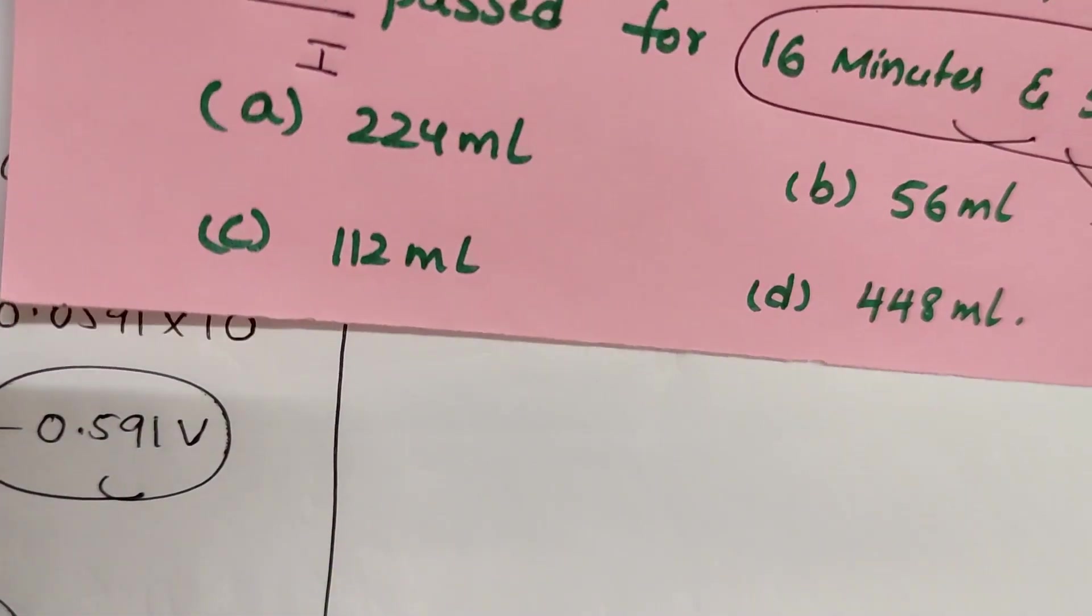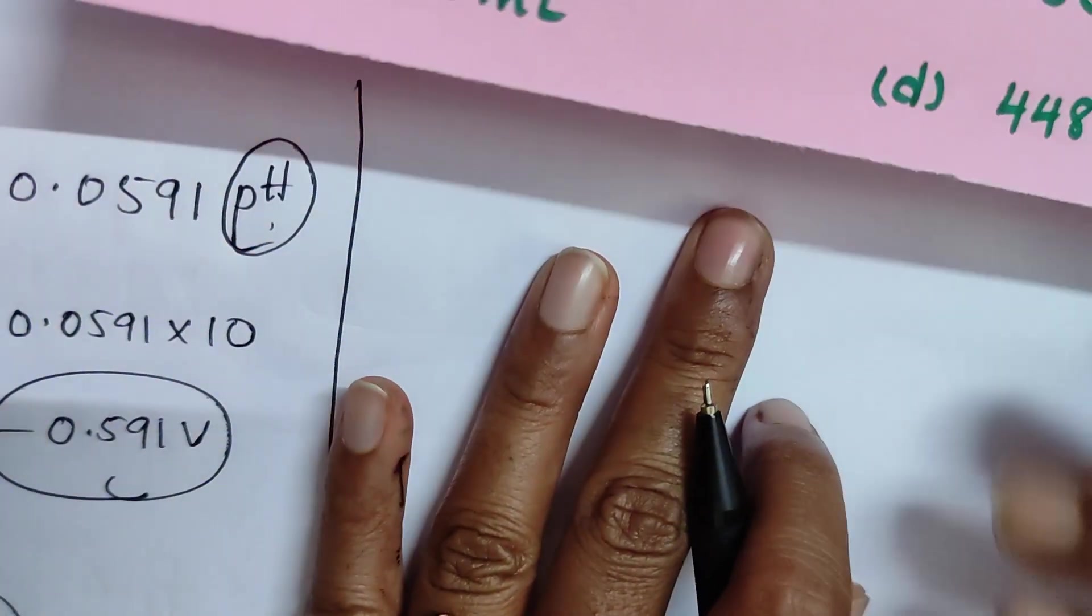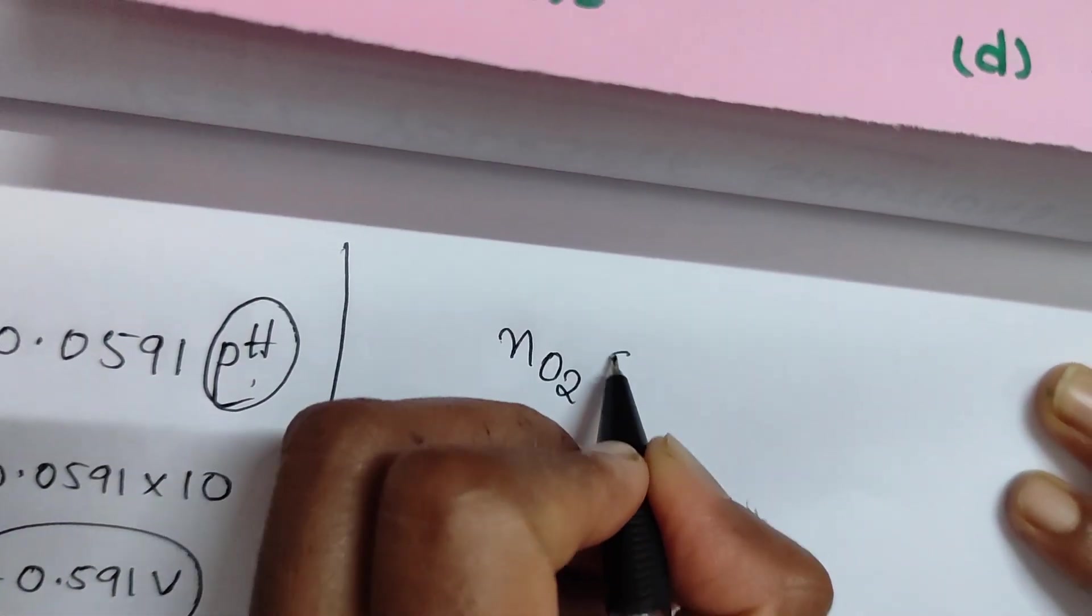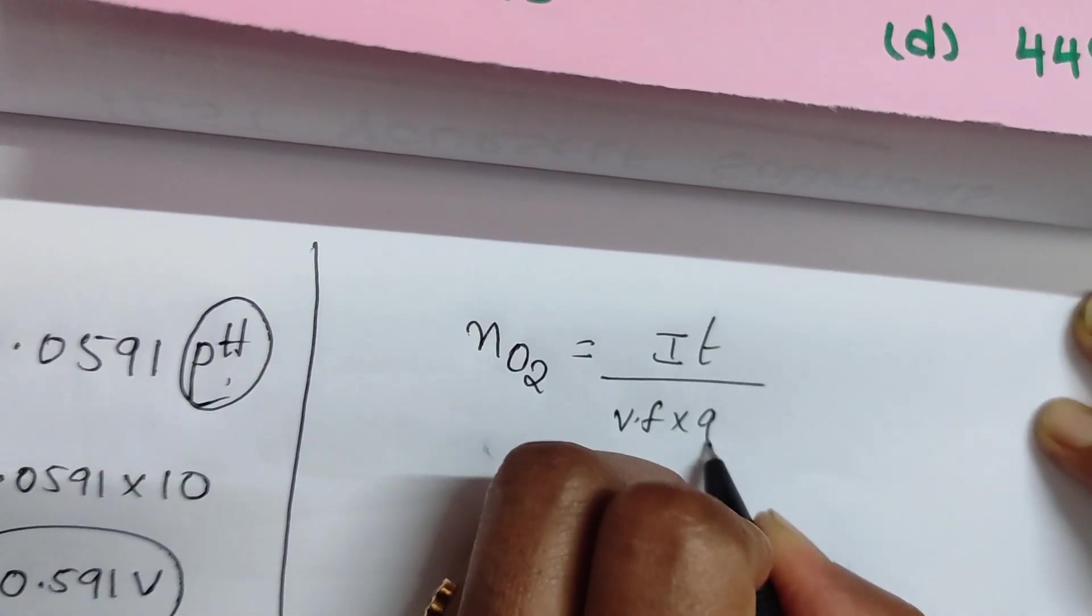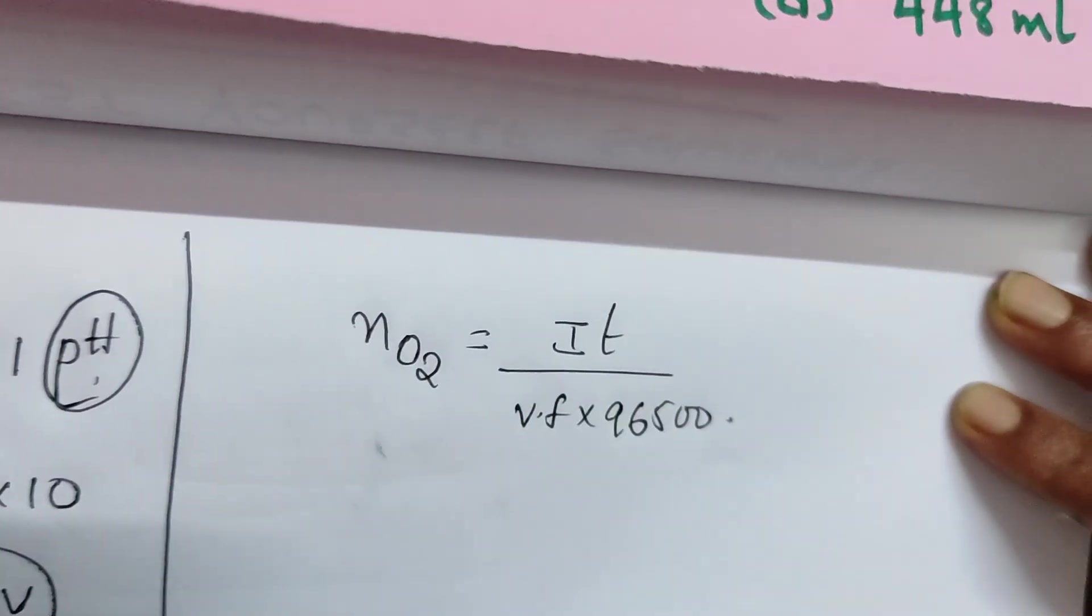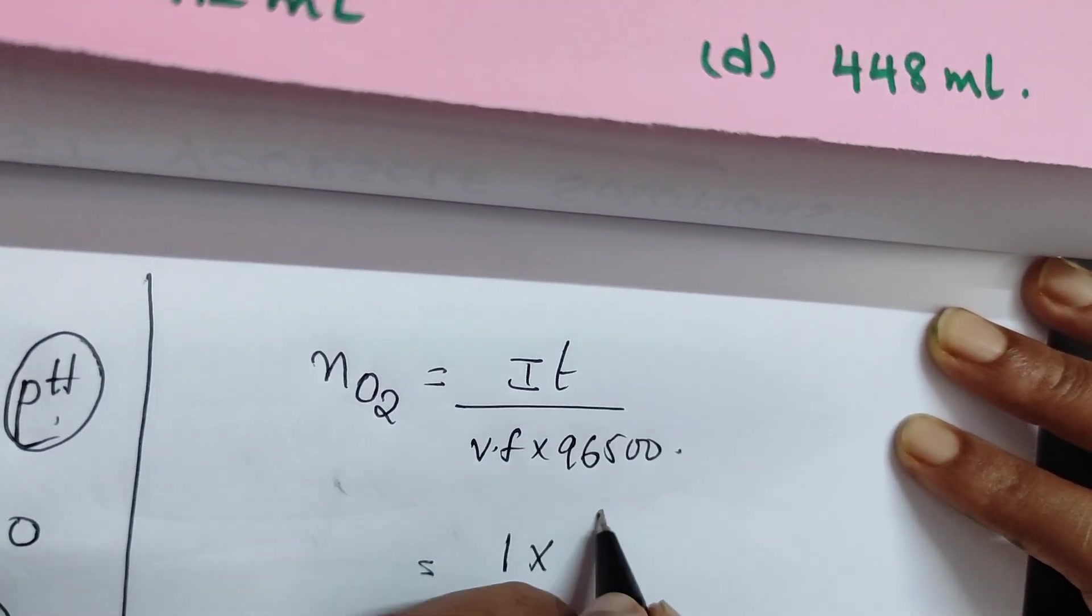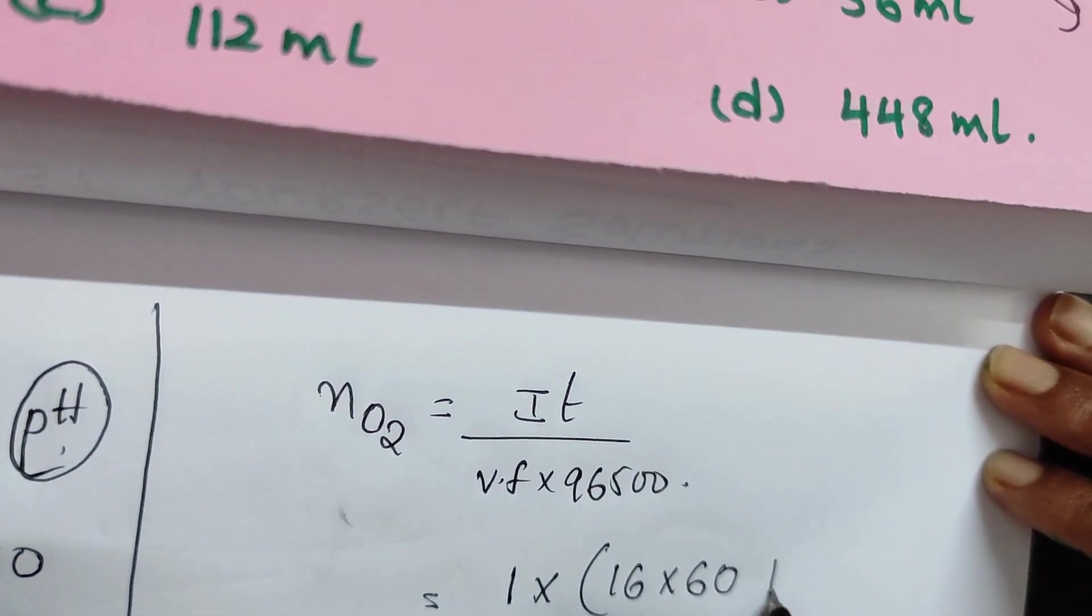Then how to use directly you can solve it. Number of moles of oxygen is equal to i·t divided by valence factor times 96,500 coulombs. That's it. I value is one ampere, time is 16 minutes.